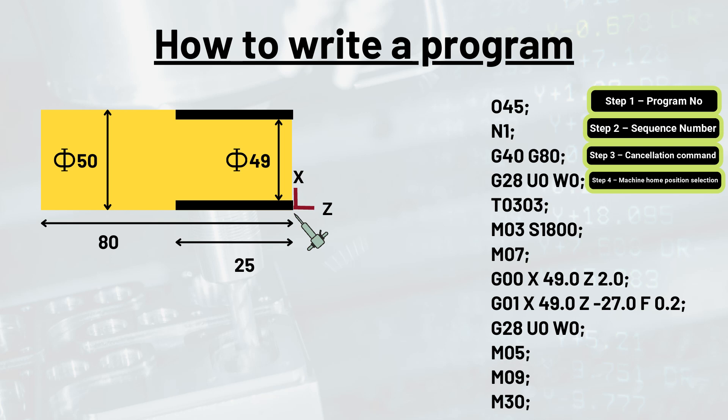Now for selecting machine home position we have command as G28 U0 W0. Now here U and W corresponds to the X and Z axis respectively for incremental command as per a CNC lathe and turning operation is concerned.